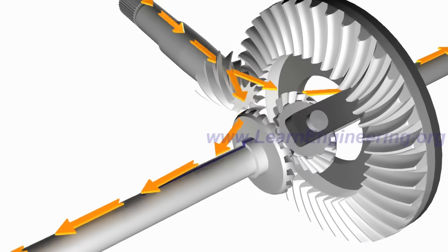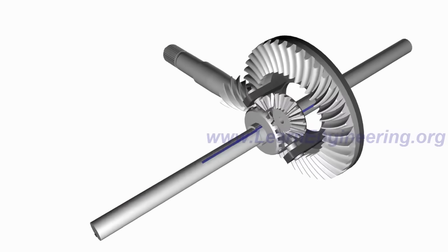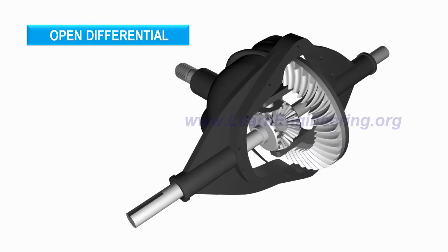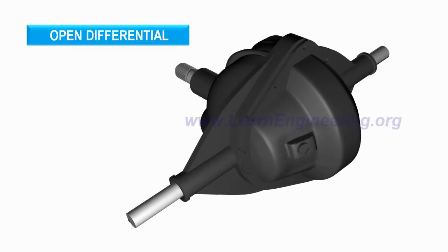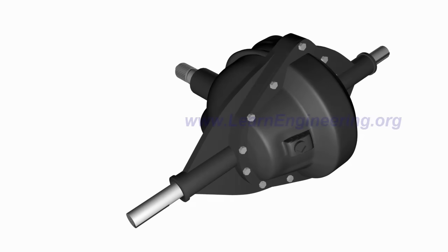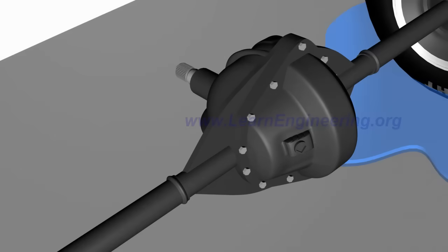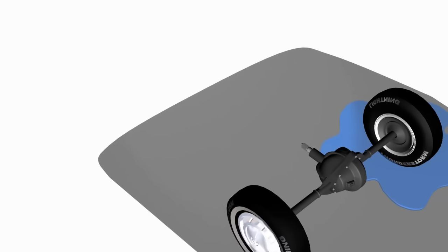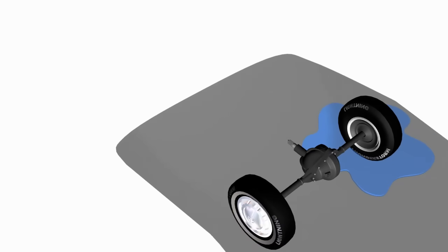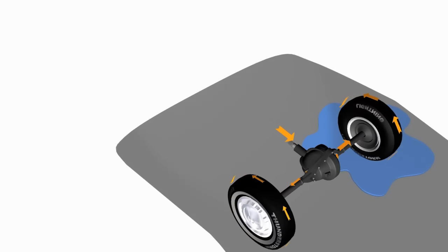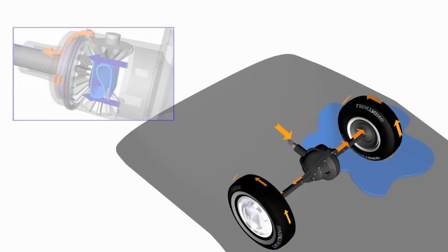The differential we have discussed so far is known as the open or standard differential. It is capable of turning wheels at different RPM, but it has one major drawback. Consider a situation where one wheel of the vehicle is on a surface with good traction and the other wheel is on a slippery track. In this case, a standard differential will send the majority of the power to the slippery wheel, so the vehicle won't be able to move.